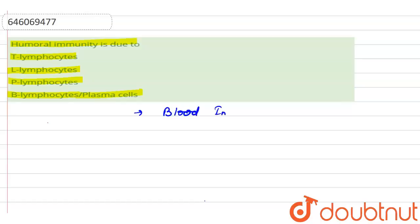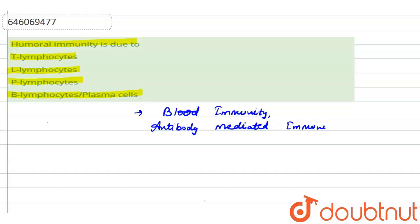First of all, we can say that humoral immunity is a type of immunity present in blood, so it is a type of blood immunity. It is also known as antibody-mediated immunity.